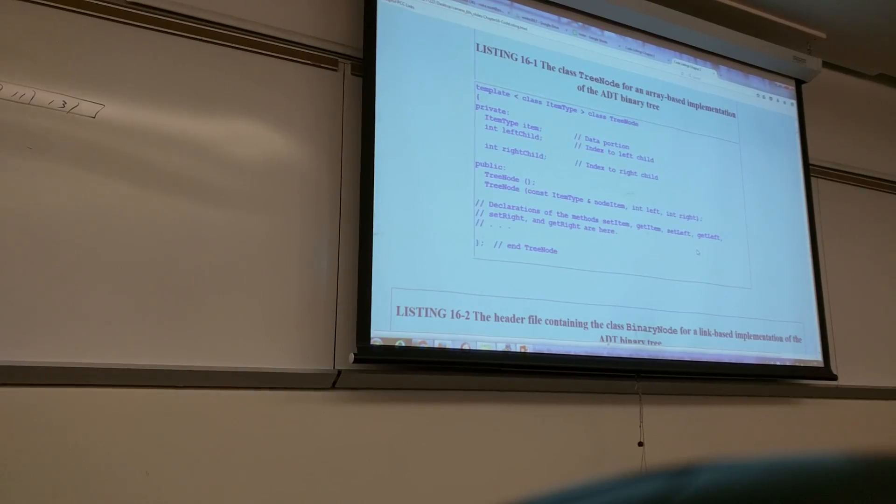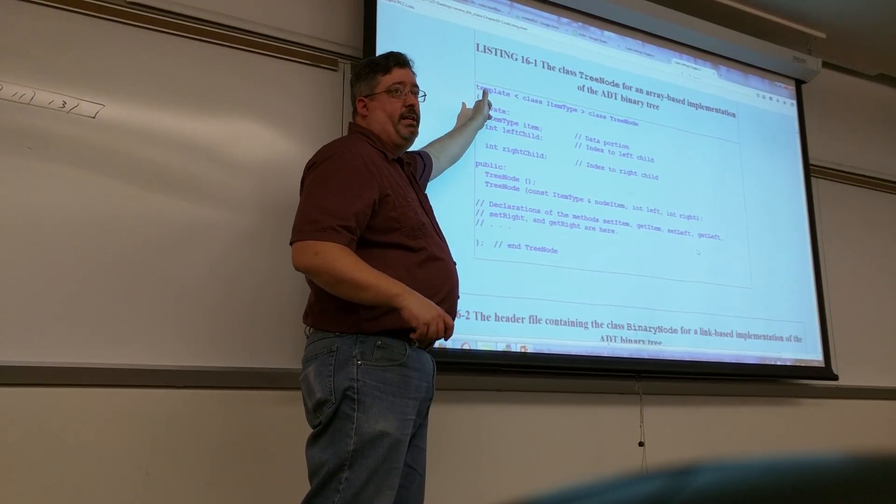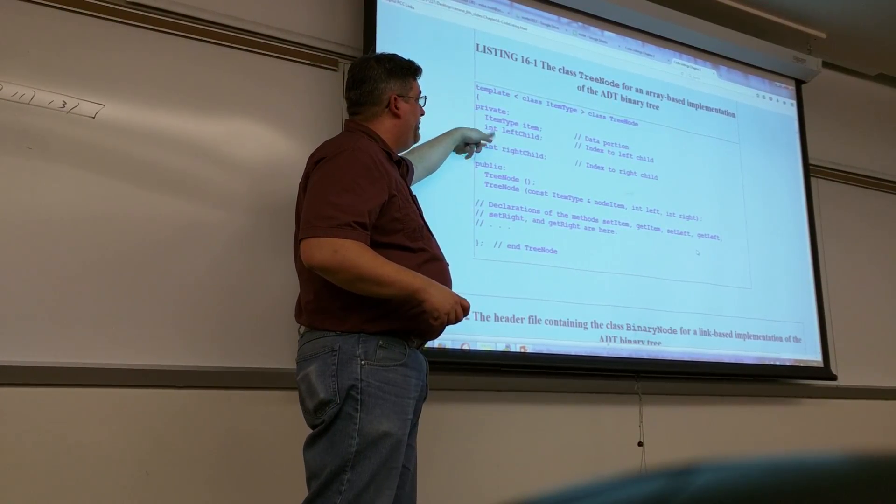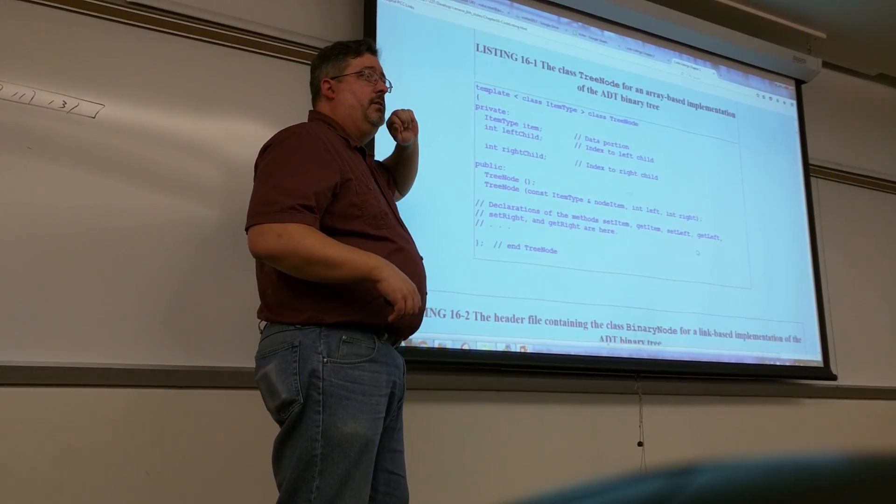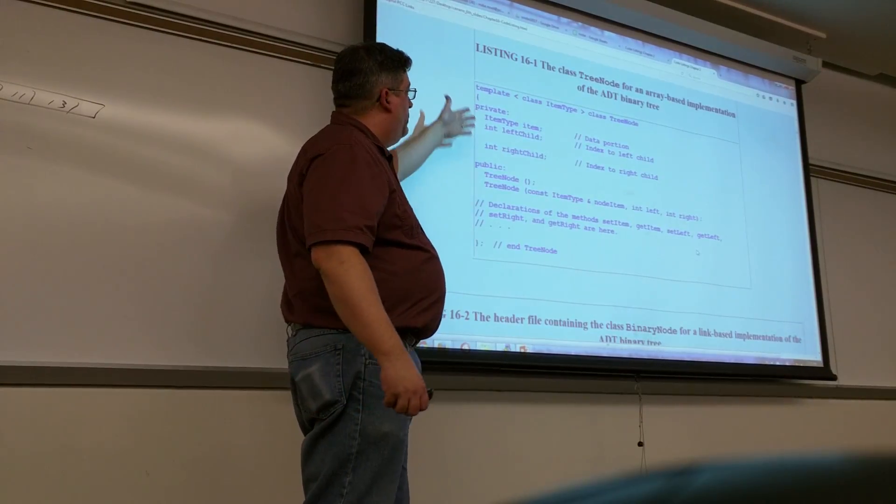Okay, so I have tree node, whatever type of data I've got in my node, let's say it's integers or strings or whatever, and then I have left child and right child, and these are integers because these are indexes into an array. This is an array-based implementation. Each tree node looks like this.